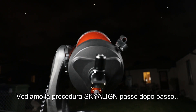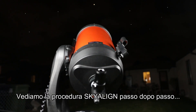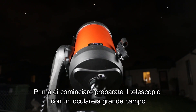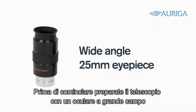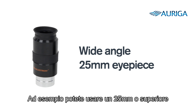Let's go through the SkyAlign process step by step. Before you begin, prepare your telescope with a wide-angled eyepiece. We recommend using the lowest magnification eyepiece that you have, ideally one with a focal length of 25 millimeters or longer.